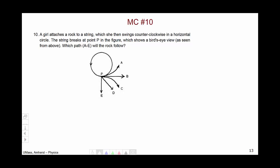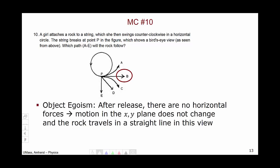Multiple choice question number 10 involved a girl attaching a rock to a string, swinging it over her head in a counterclockwise direction, and asking the direction the rock travels when the string breaks. The correct answer was choice B. This is essentially a question about inertia. After release, there are no more horizontal forces in the x and y directions, so motion in the x-y plane no longer changes—there is no force, no change in motion—and therefore the rock travels in a straight line from this view.